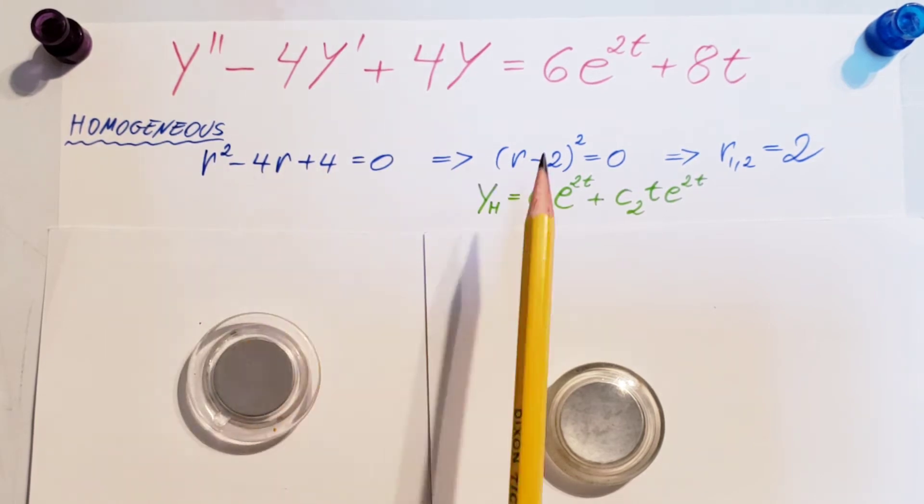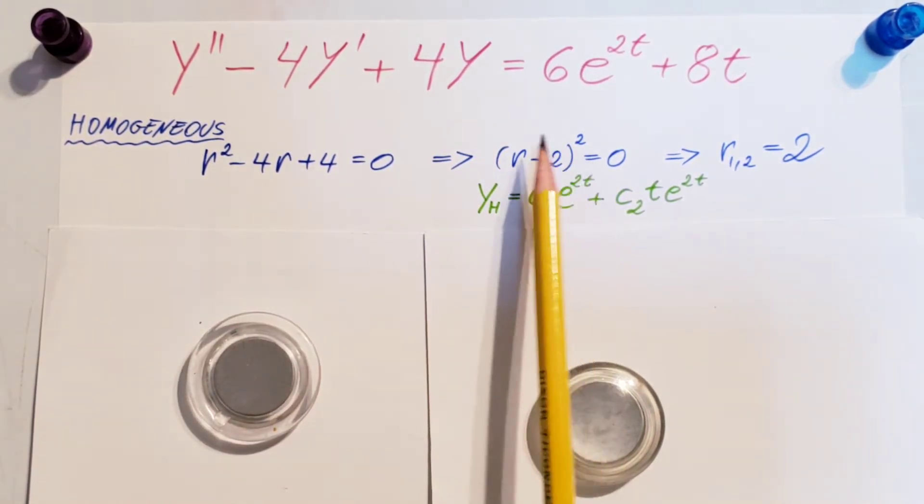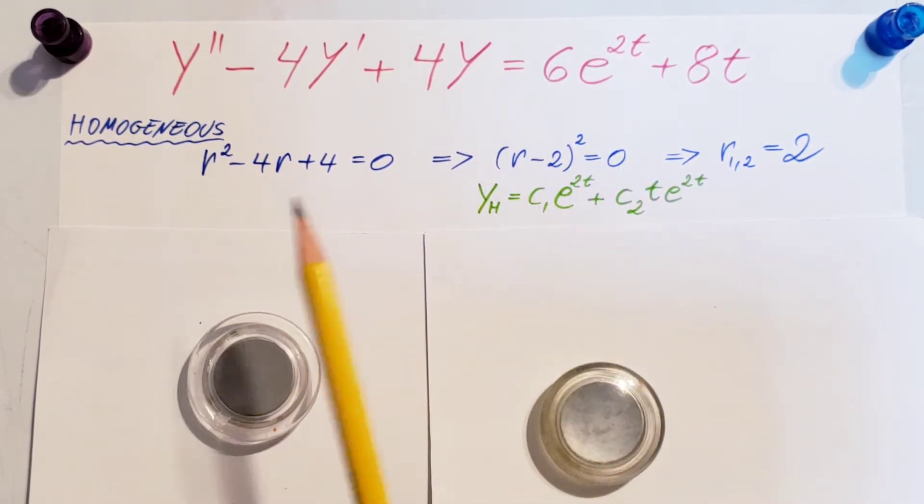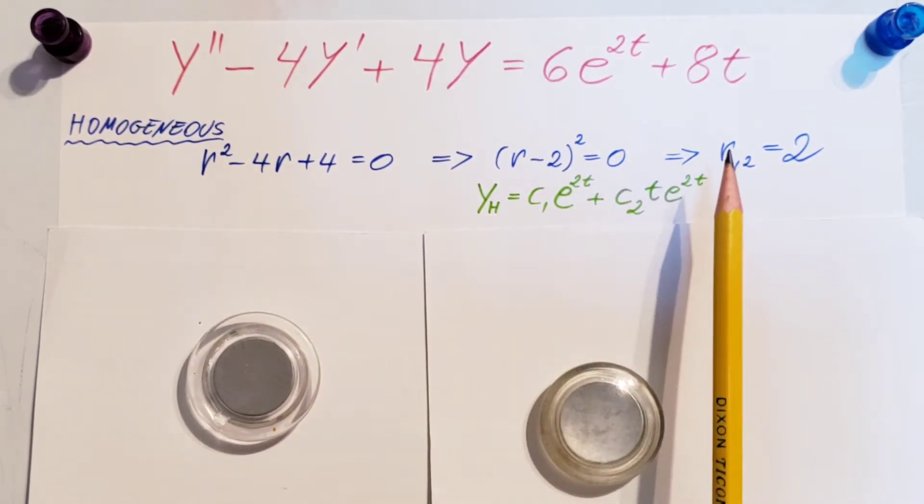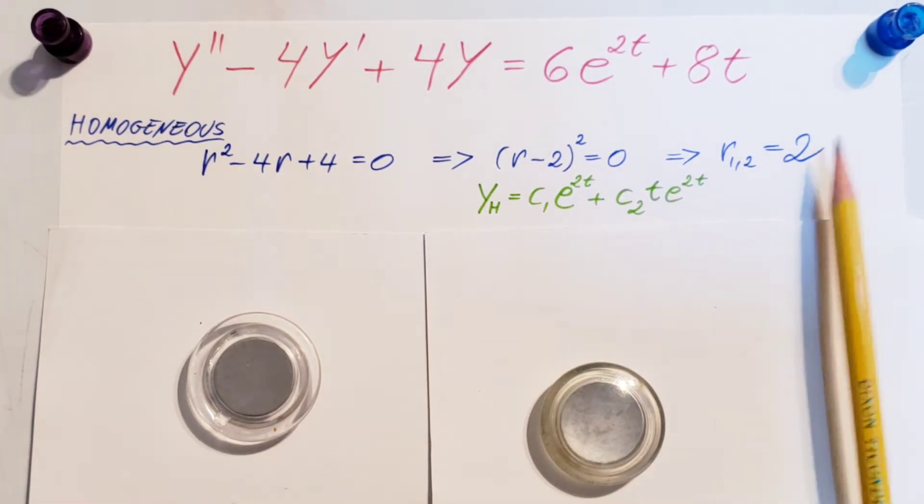Now, from here we can factor. We can find r minus 2 on the square equals 0, and this will give us two roots, r1 and r2, which both are equal to 2.